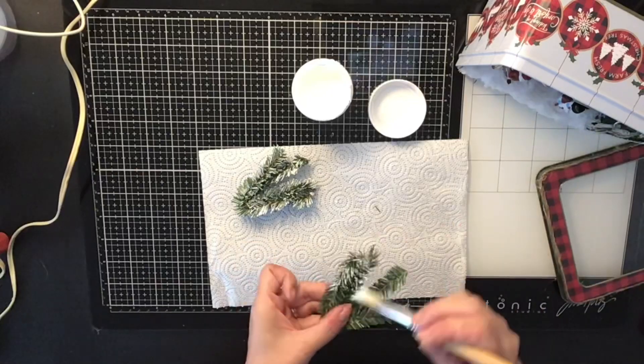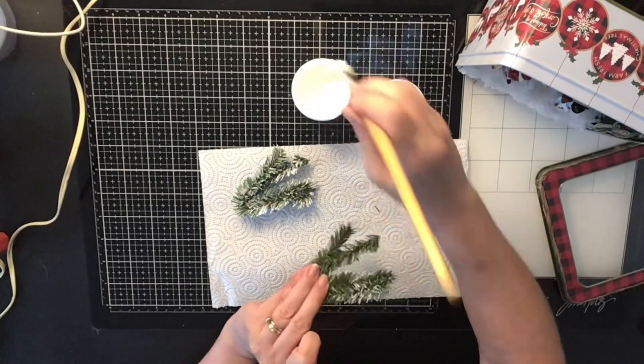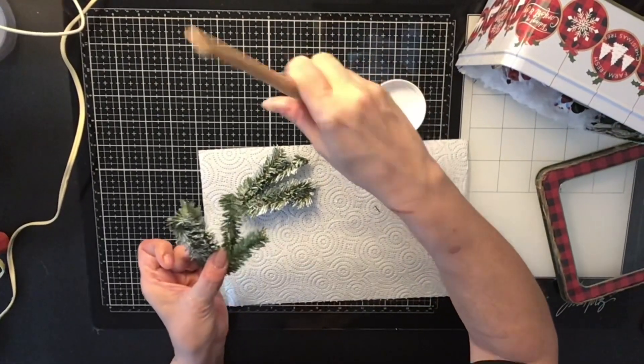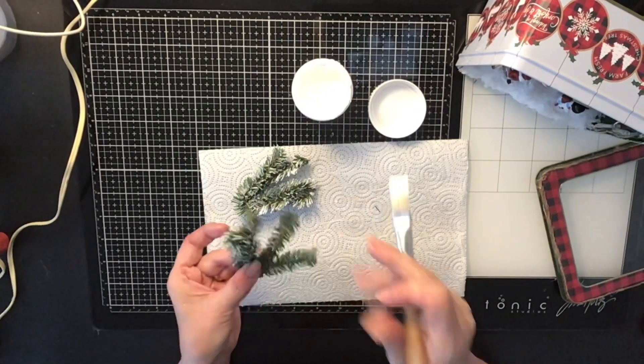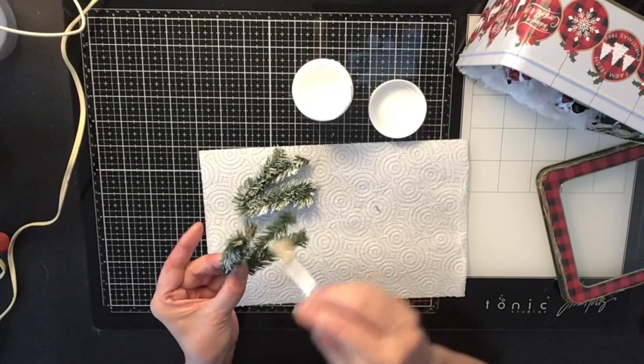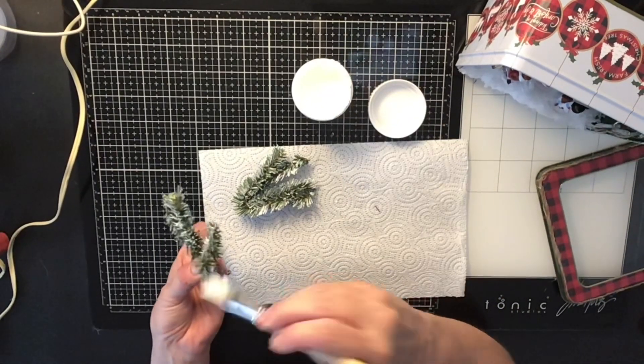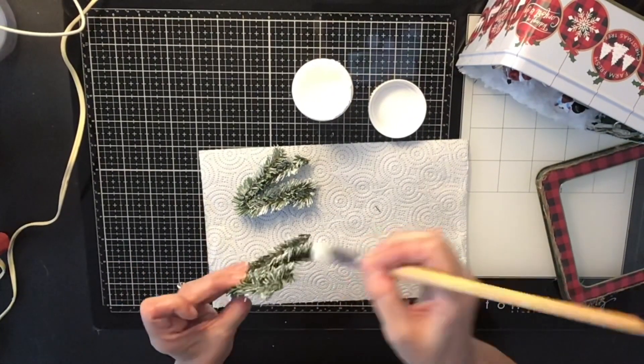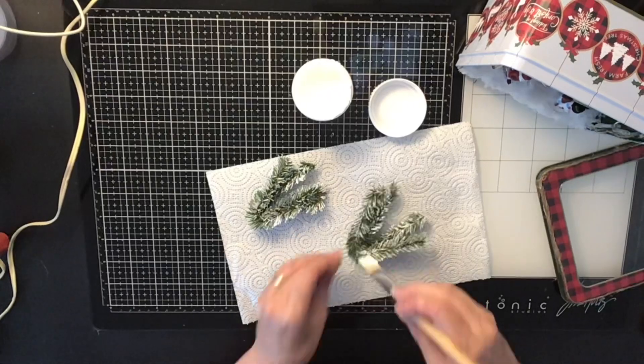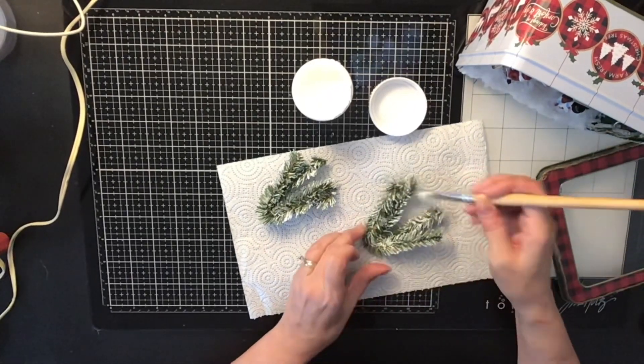And then what you're going to see me do next is I'm going to hot glue them down to the front top of my tin. And I don't want to cover the window when I glue them down because I want to be able to see in the window at my beautiful scene that I just made. So once that's all done.